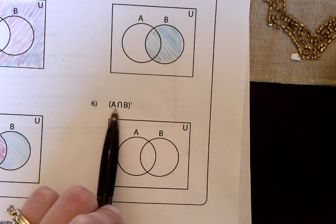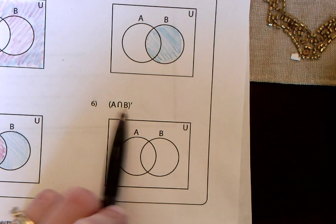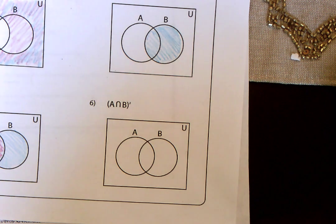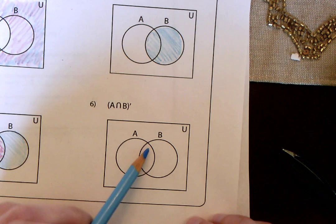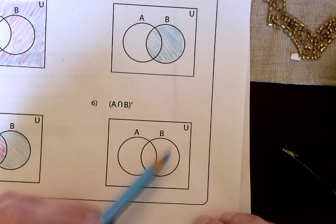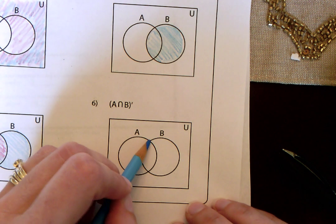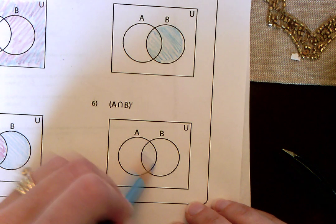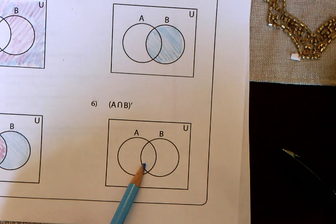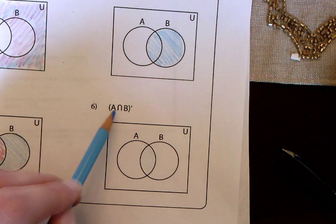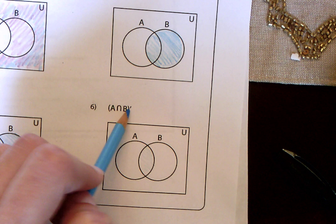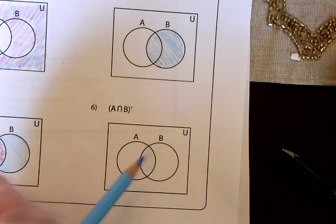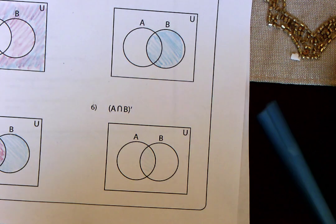And then this says the intersection of A and B, where is that? So if you look at where the intersection of A and B is, here's A, here's B. Where they intersect is actually here. It's in there. But they're saying they want the complement of that. They want everywhere where they don't intersect.